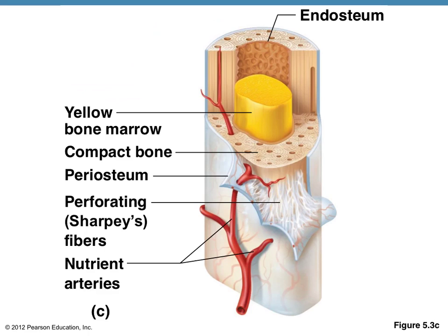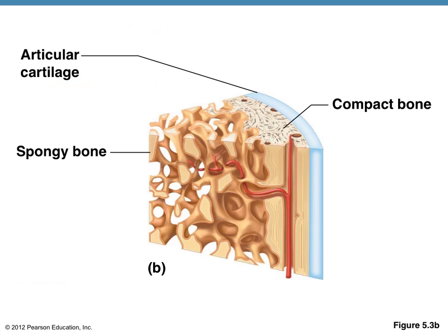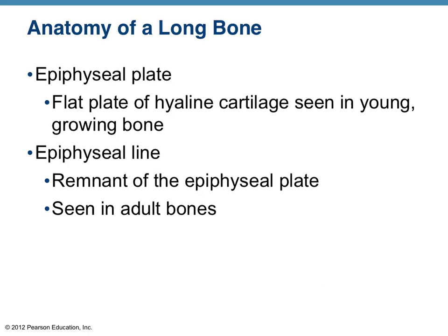Here's a look at the anatomical features we just discussed. The articular cartilage — the name gives it away. Articulations are movements of the human body at different joints, and it's made of hyaline cartilage. Hyaline means glassy, so there's not very much friction there — it provides a smooth surface for bones to move against one another at a joint. The epiphyseal plate and the epiphyseal line, for our purposes, are essentially the same thing. Another name for the epiphyseal plate is the growth plate. The epiphyseal line would be seen in adults or mature skeletons — it's just a remnant of where the growth plate used to be. For our purposes, we can interchange those.